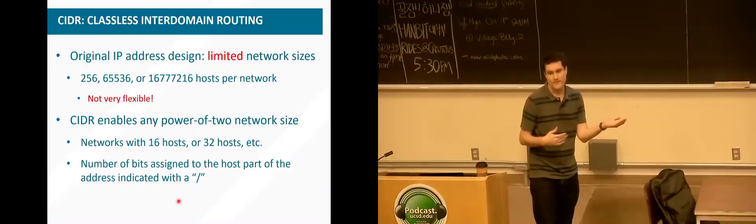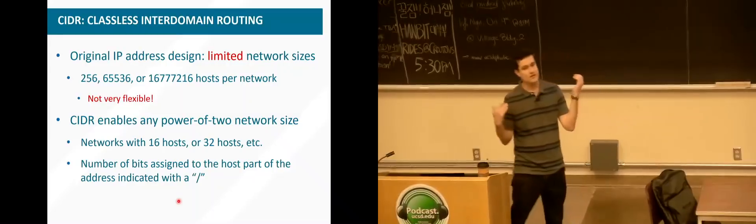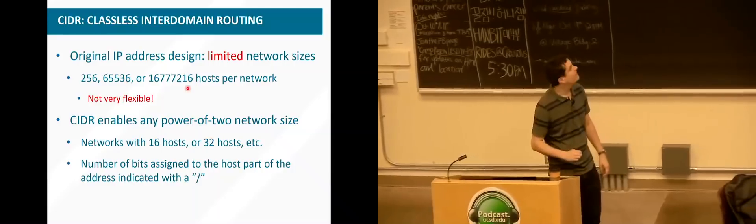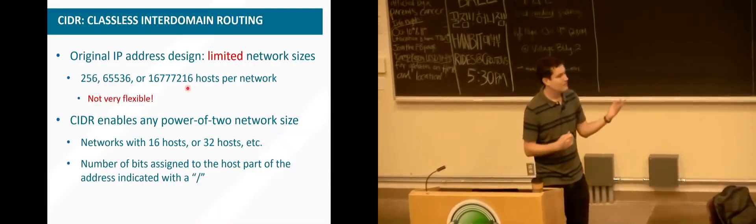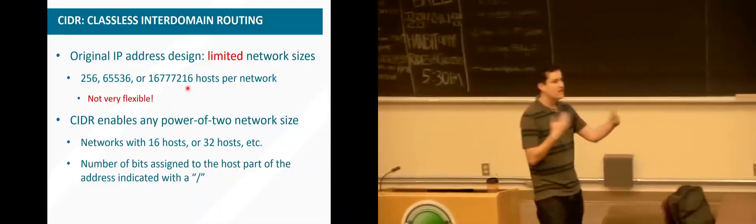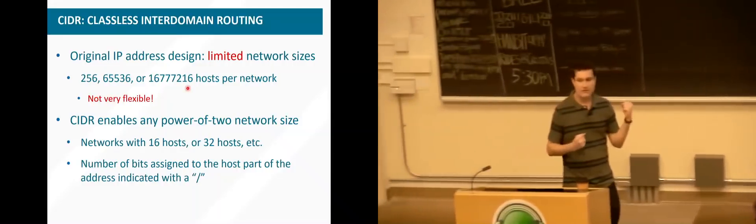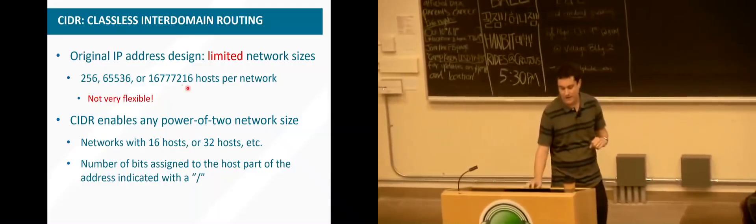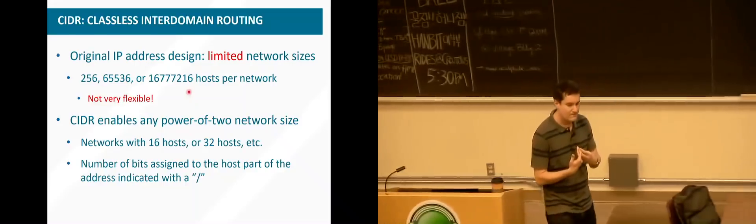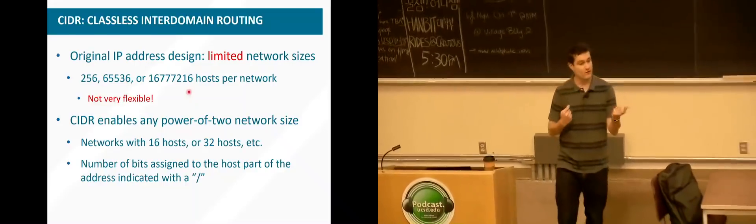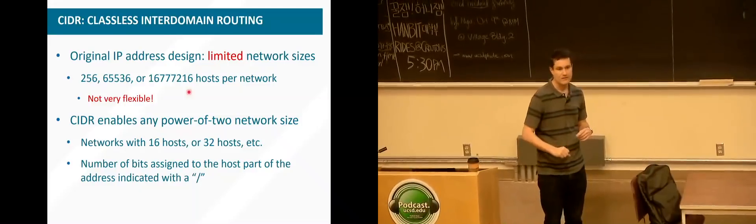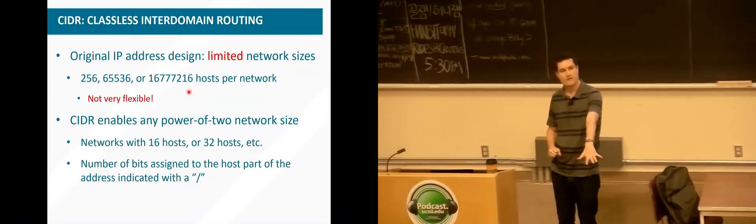A network could either have 256 hosts, 65,000 hosts, or 16 million hosts — and you had to pick one. Initially IP addresses were really cheap, so MIT got 16 million, and there was a ham radio group that got 16 million. Now that we've run out of IP addresses, there was a lot of motivation to be more fine-grained — to be able to give just 16 addresses, or 4,000, some variation between these extremes.